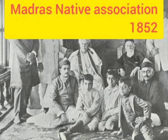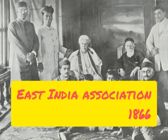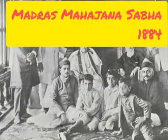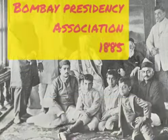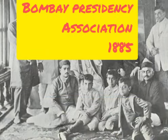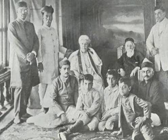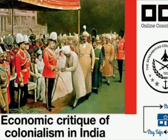They took initiative to form political outfits such as the Madras Native Association (1852), East India Association (1866), Madras Mahajana Sabha (1884), Poona Sarvajanik Sabha (1870), the Bombay Presidency Association (1885), and many others.